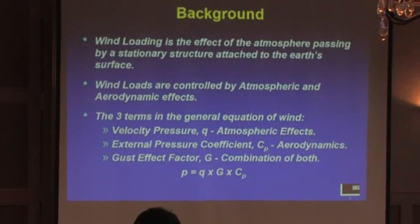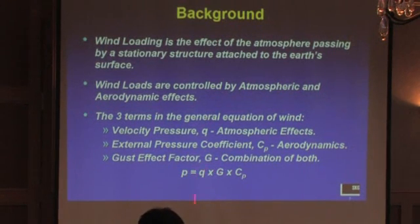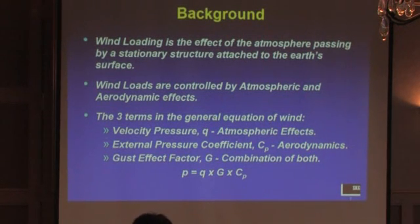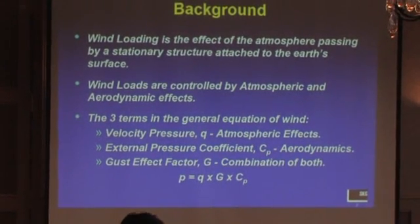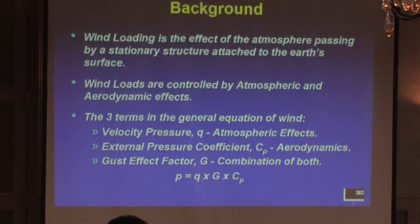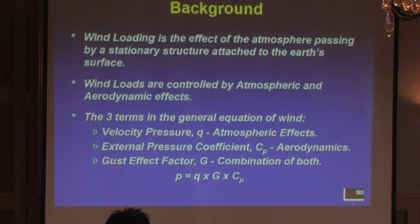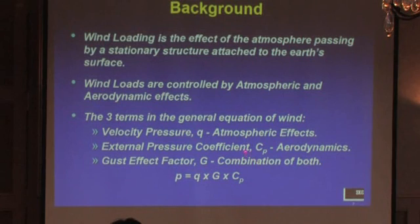Out of the three terms in that very important equation for design wind pressure, the first term — the velocity pressure — has everything to do with atmospheric effects, very little to do with aerodynamic effects or the properties of the structure. C sub p is the other way around: it is all related to the structure, not so much to the wind flow. And G is a combination of the two; it deals with both atmospheric and aerodynamic effects.